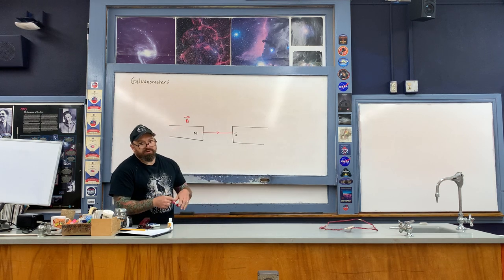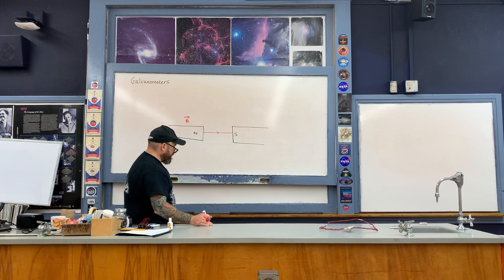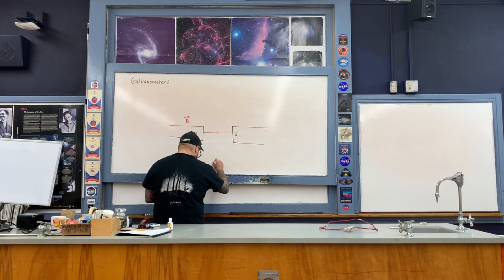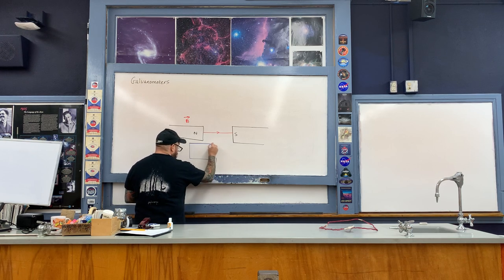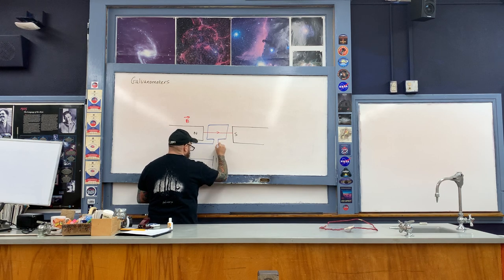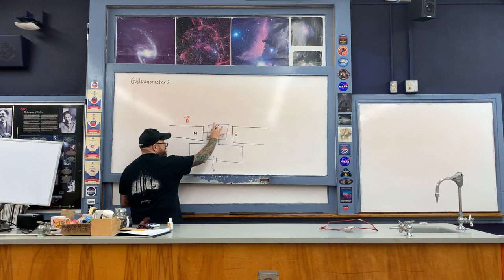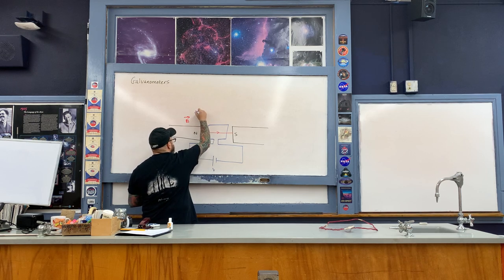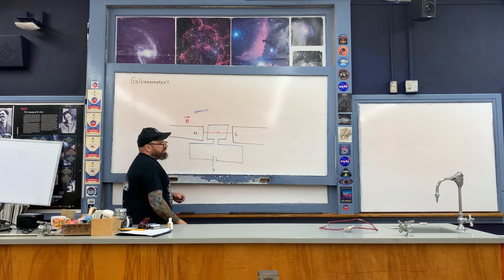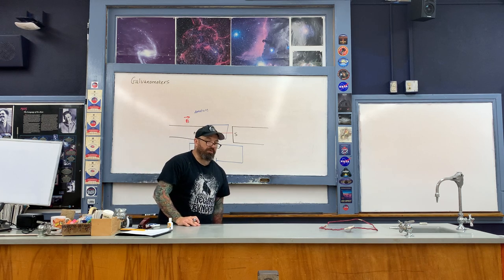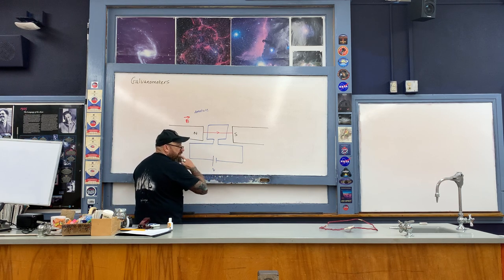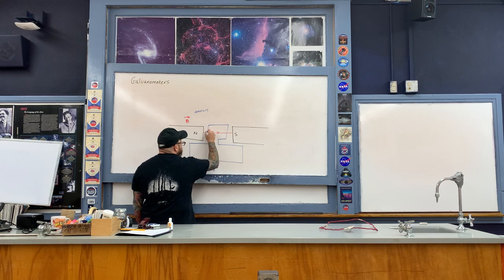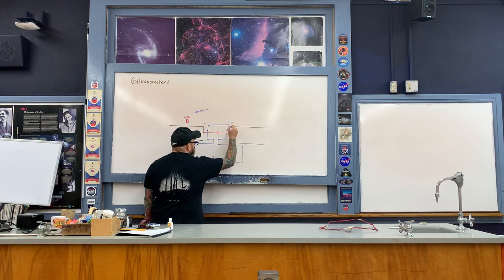Now let's say that I have a conventional current, so I first have to have a potential difference — I have to have a battery. Here's my potential difference V, and then I'm going to draw my loop of wire like this. This rectangular portion here is referred to as the armature. That term is a little more important when talking about electric motors but it also applies to galvanometers. My conventional current is basically going to flow clockwise here on the diagram.